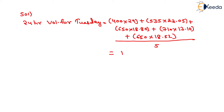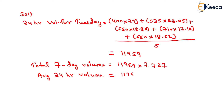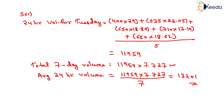The total 7-day volume is calculated by multiplying the 24-hour Tuesday volume of 11,959 by the daily expansion factor of 7.727. To get the average 24-hour volume, we divide this result by 7 since there are 7 days in a week. This gives us 13,201 as the average 24-hour volume.